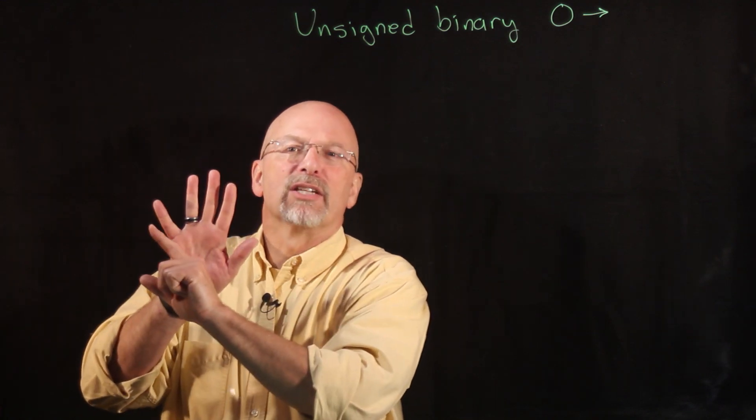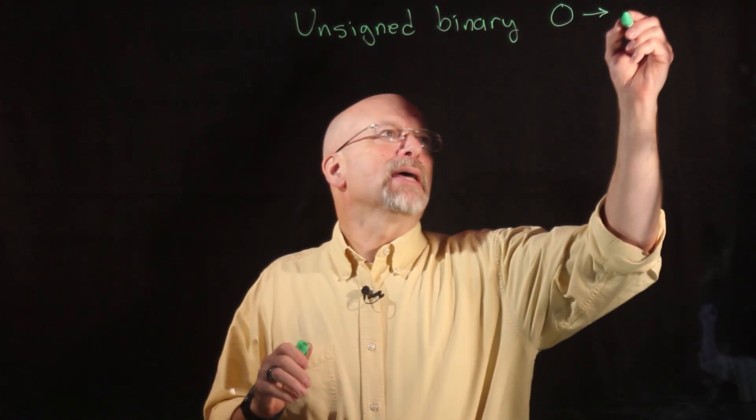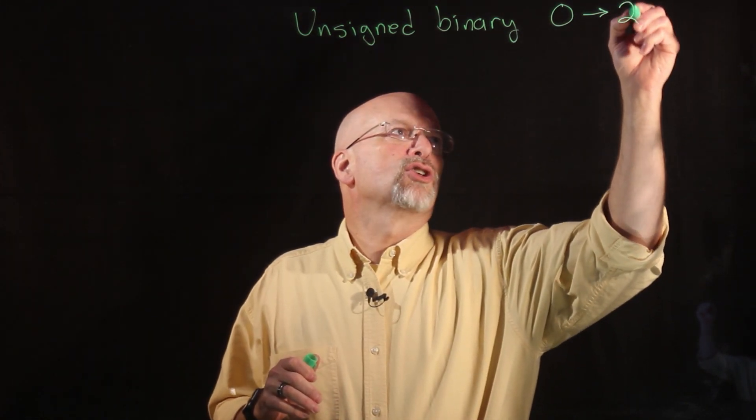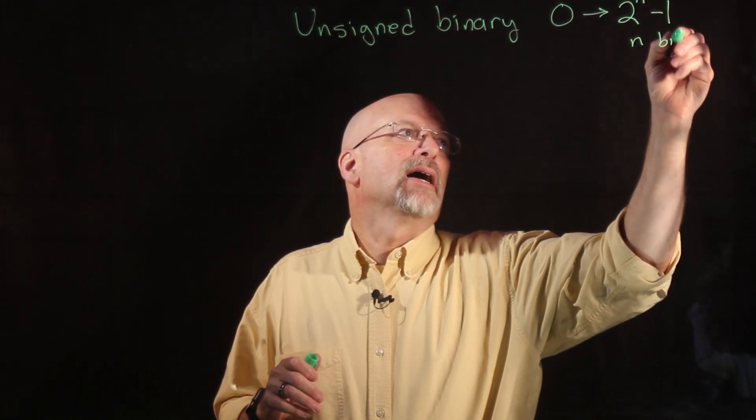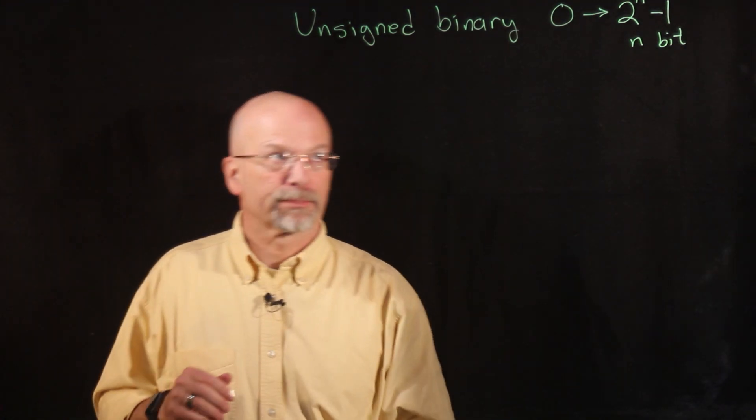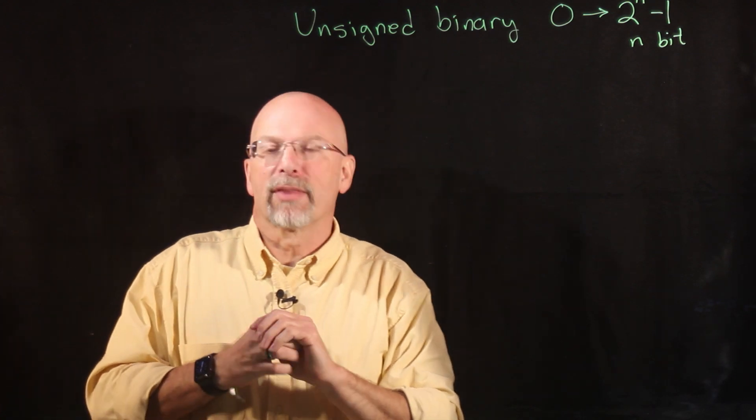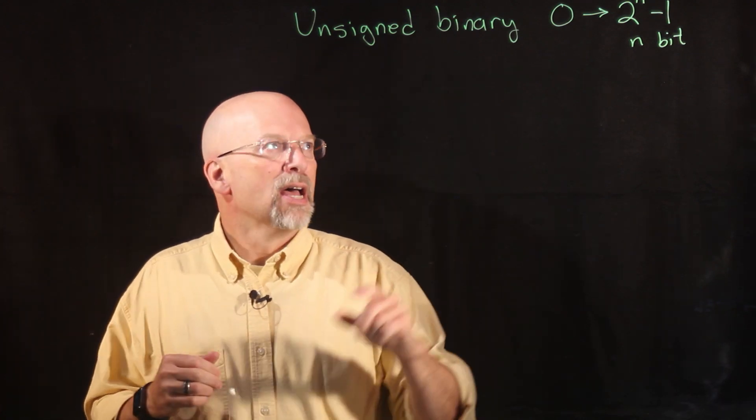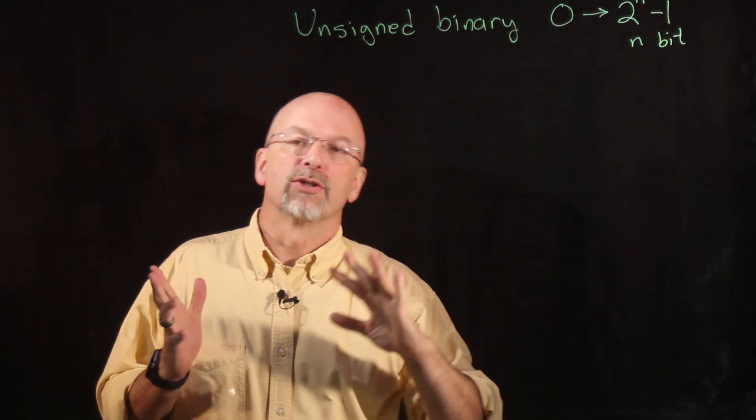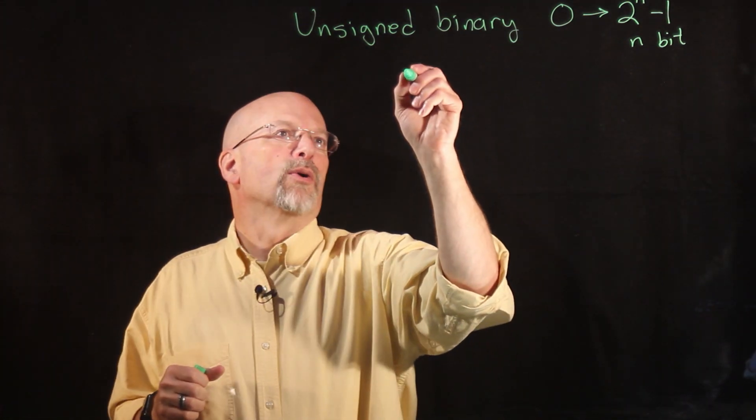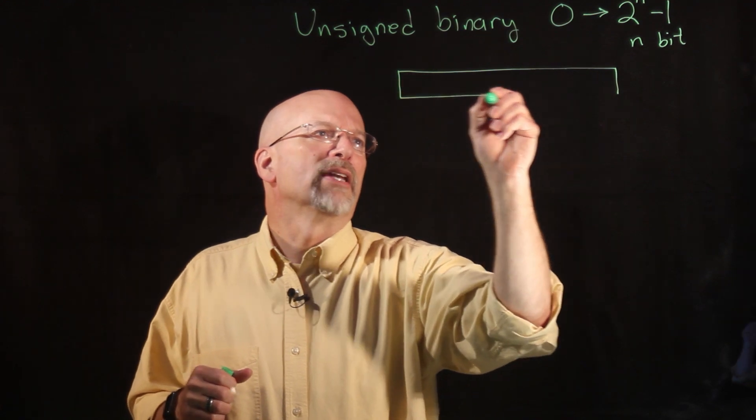The next digit, if I had an 11th finger over here, would have been the two to the 10th position or 1024. So for n bits, what we can represent is two to the n minus one. This is if we have an n-bit binary value. And so I can tell you, eight bits—that's typically what we're going to represent things in in this class—that would be two to the eighth minus one. Two to the eighth is 256, minus one is 255.